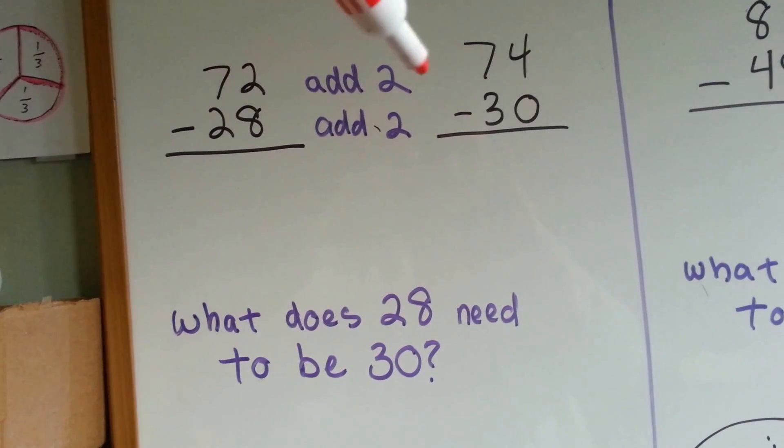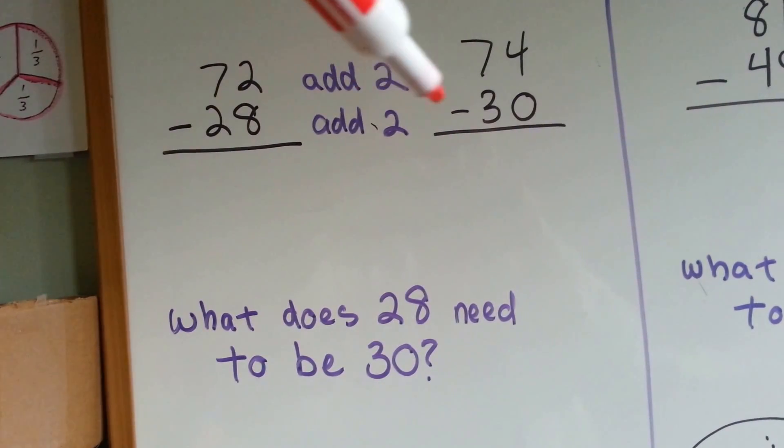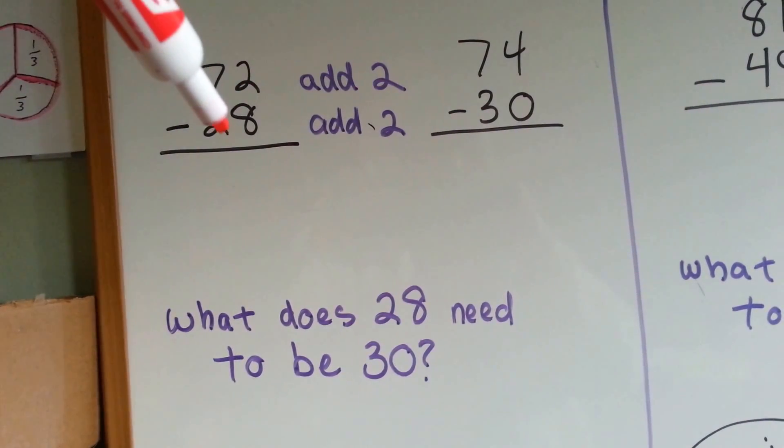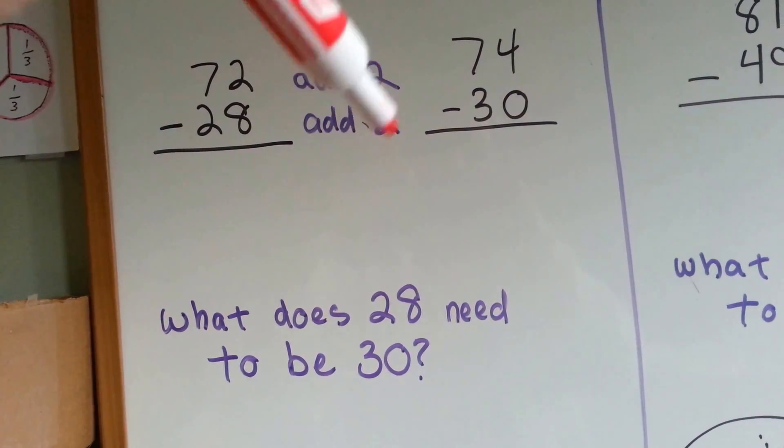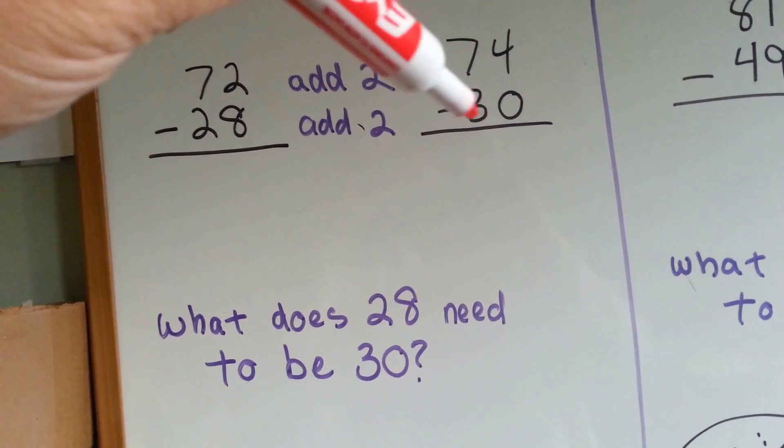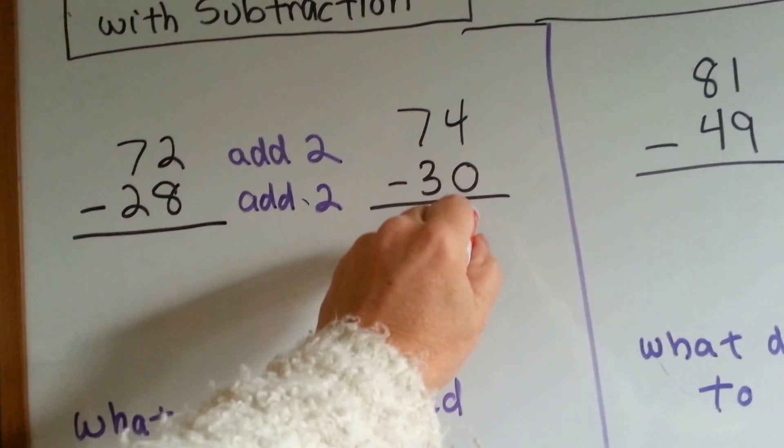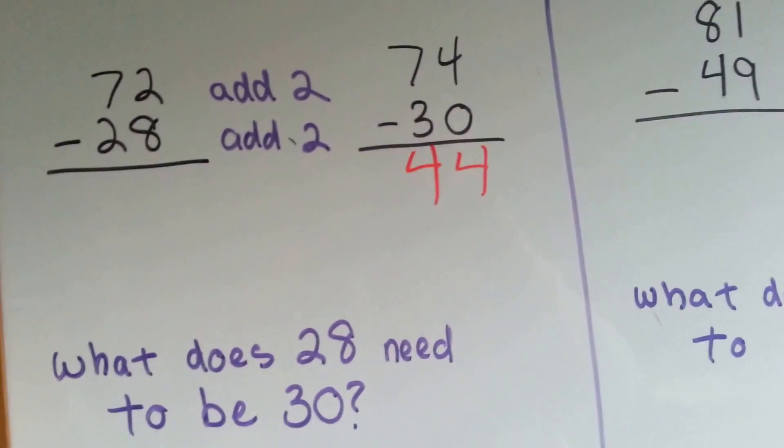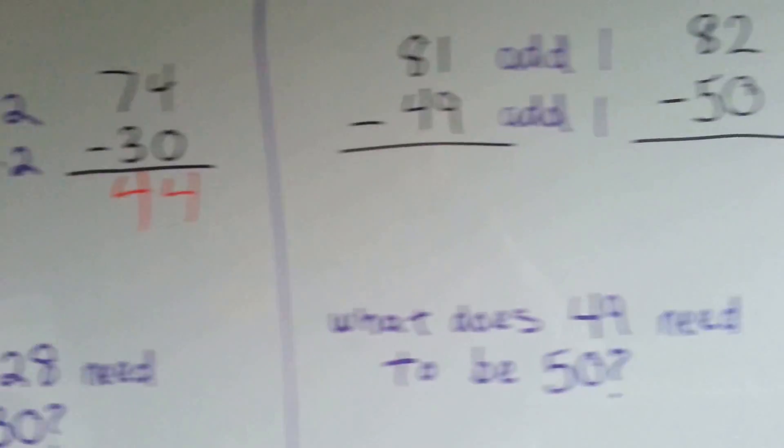See? 2 more. 72, 73, 74 minus 30. See? 28, add 2. 29, 30. 74 minus 30 is easier. It's easier to do in your head. Try this one.